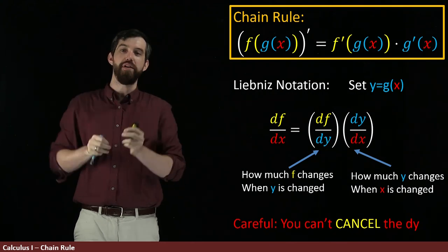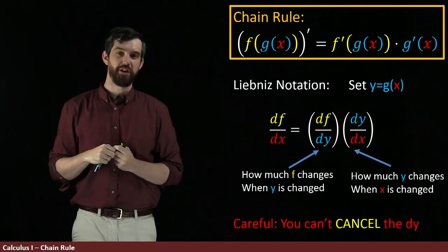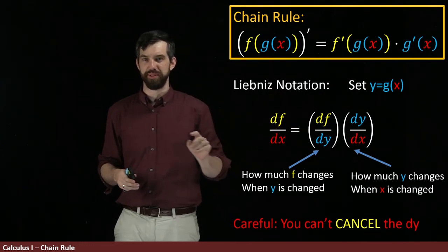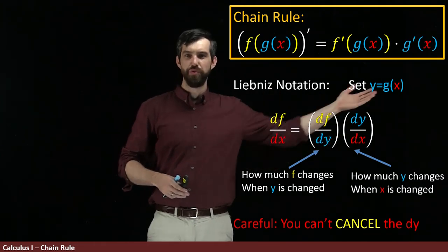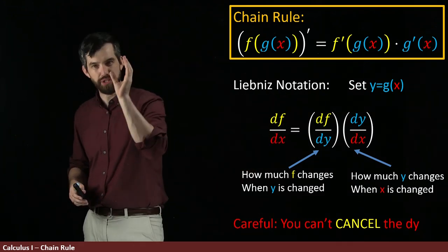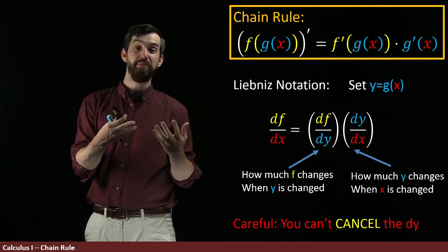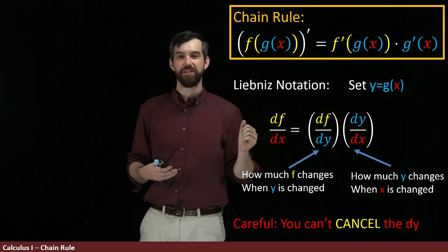This df/dy is thought of as a single symbol. It is one concept, it is one function, it is one number at any particular point. So, I don't want you to think of this as four different symbols that have been divided and where you can do normal cancelling. I think you want to think of this as two different symbols, one df/dy and the other dy/dx, and you can multiply them together, but there's no form of cancelling.